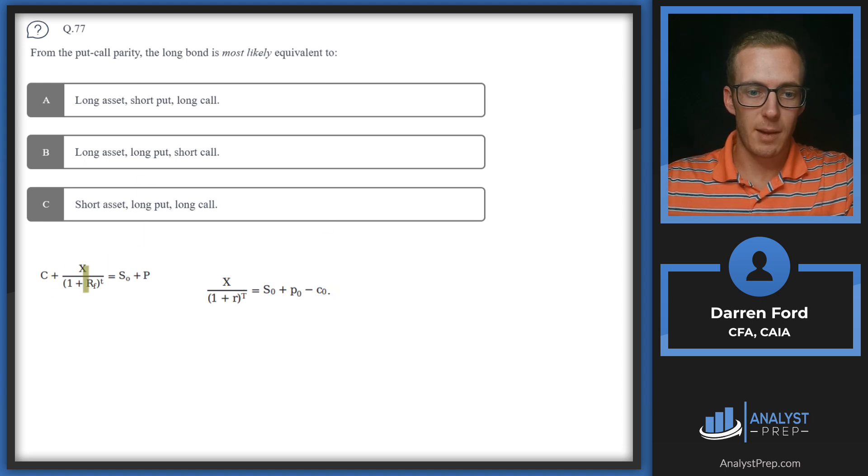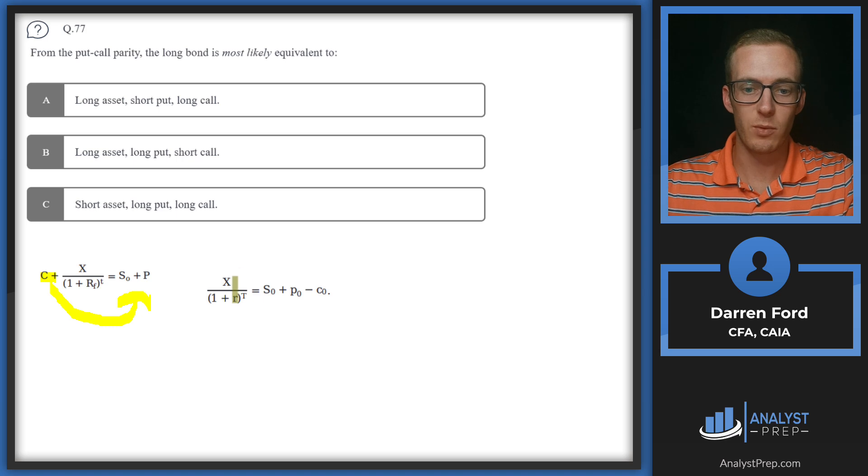What we're doing here is taking that put-call parity and moving the call over to this side in order to be looking at what the risk-free bond equals. So we subtract the call. When we're looking at this side, the positive or negative are going to determine whether we're going long or short. We'll use that to interpret our answer. We've got positive S, which is long the underlying, so long the asset. That leaves A and B still in play, and we can cross off C.